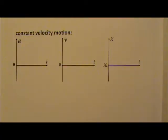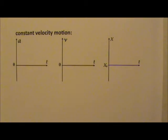The next kind is constant velocity motion. Since velocity includes speed and direction, this means the object must be moving at a constant speed and in the same direction, which means along a straight line. See if you can figure out what the graphs are like for constant velocity motion.